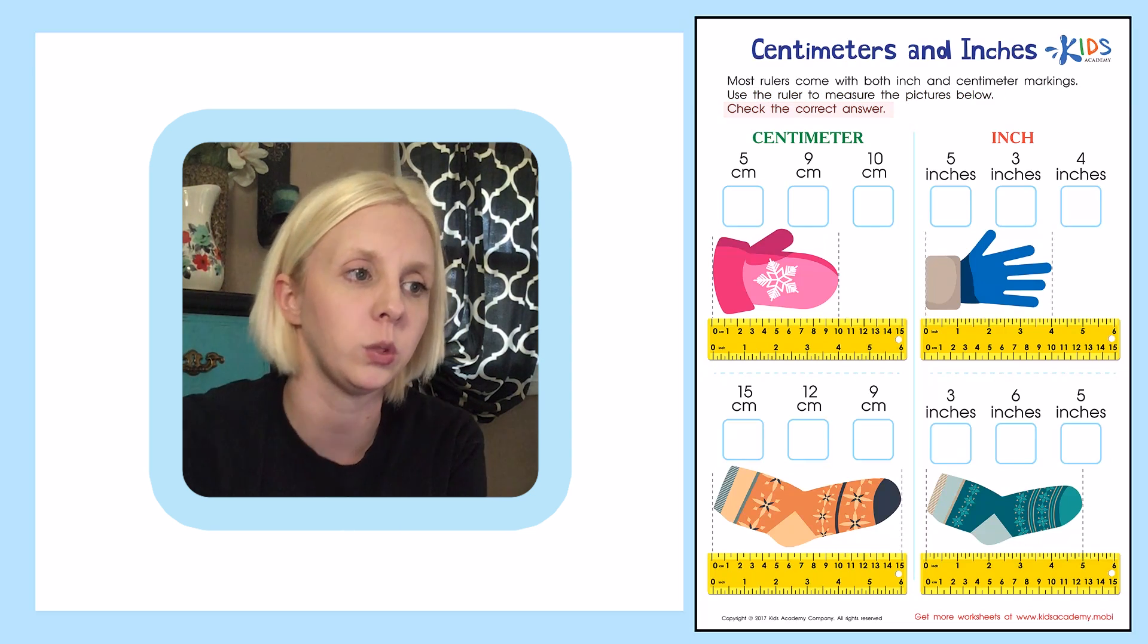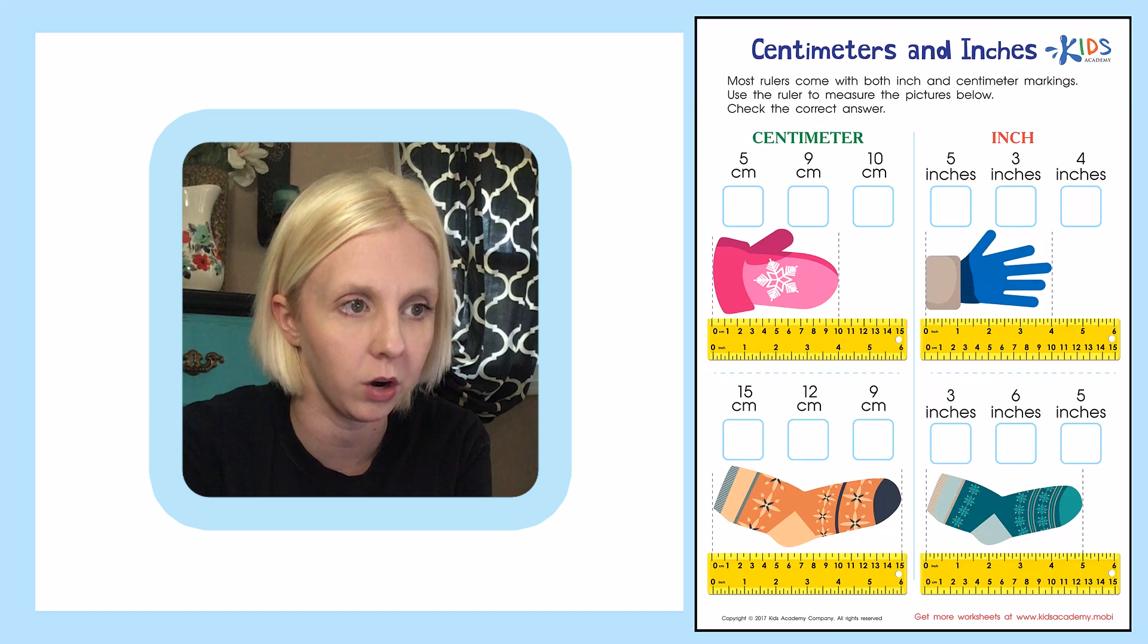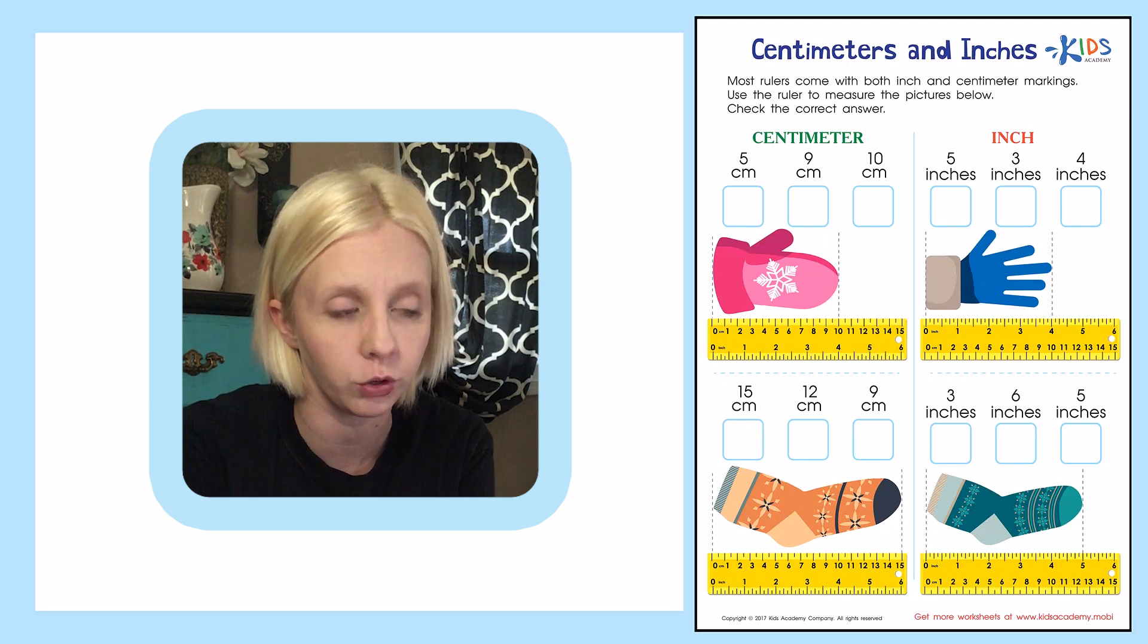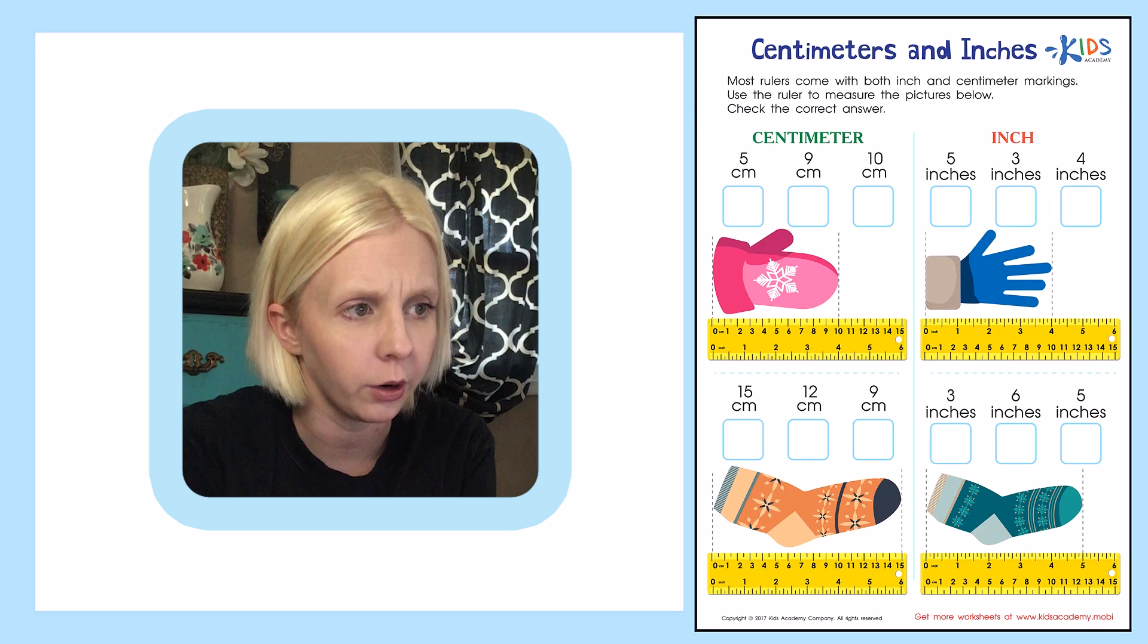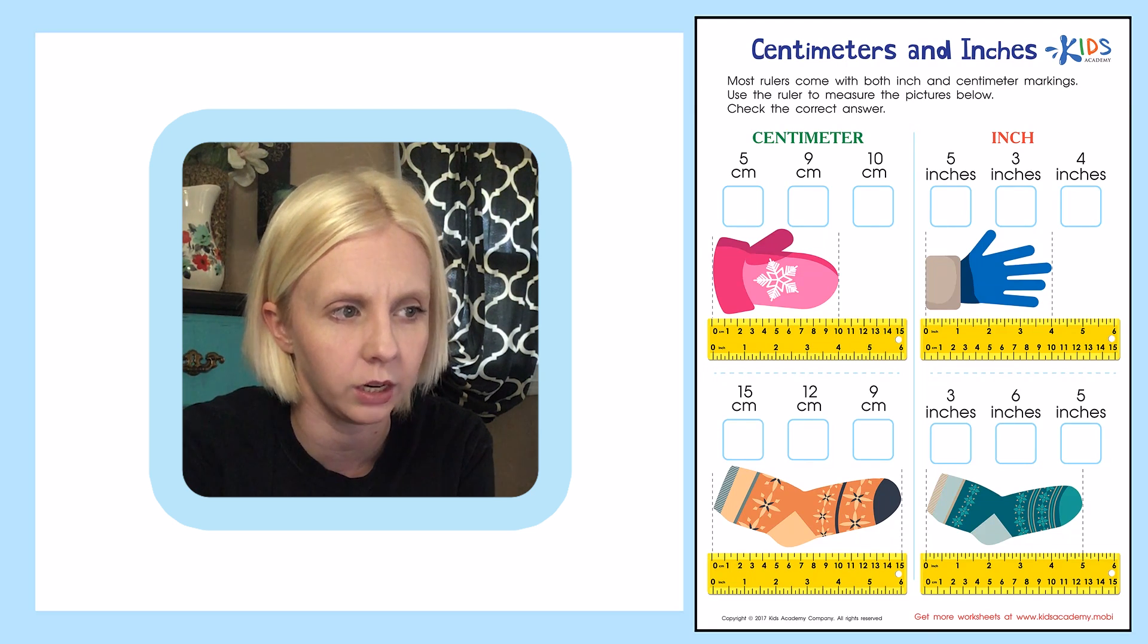So what we're going to be doing is we've got all of these different things here and we're going to be using that yellow ruler to measure those different things. Now let's look at our ruler first and kind of get an idea of where everything is.